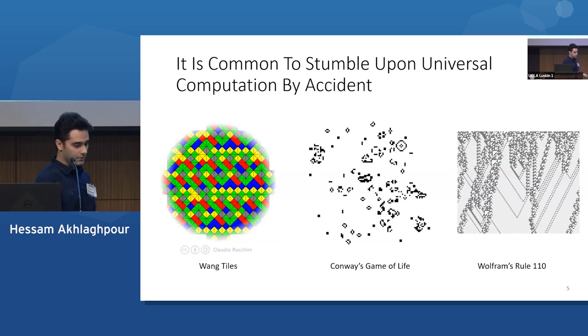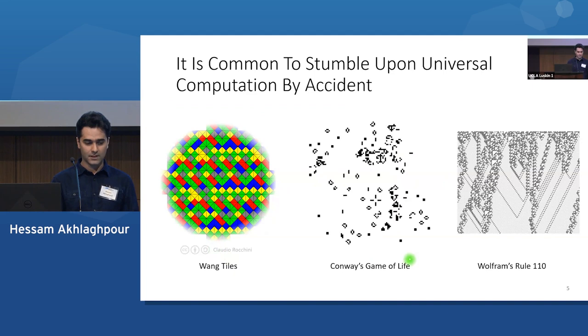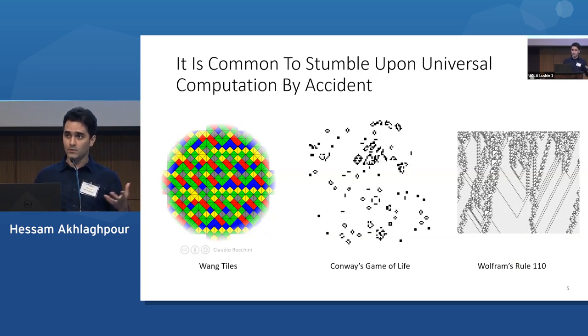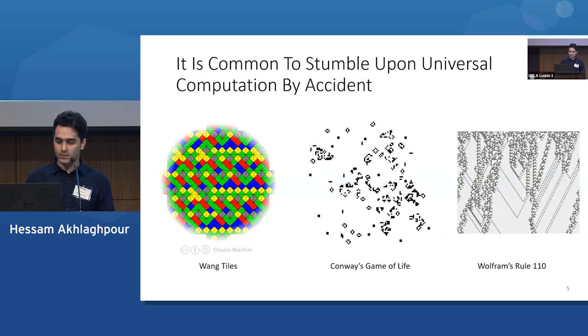So these are three historical examples: Wang Tiles, Conway's Game of Life, and Wolfram's Rule 110. These are all examples of systems that weren't initially intended to be a powerful computation system, but later they discovered that actually it's universal. You can use it to simulate a Turing machine or any other of these universal computation systems.